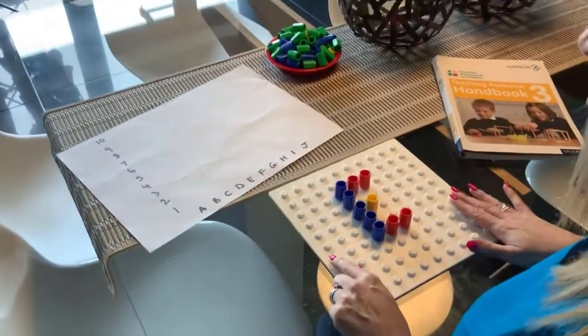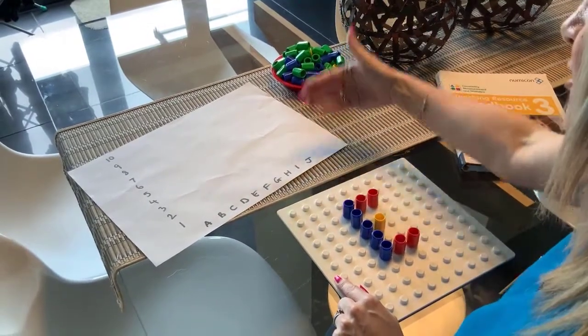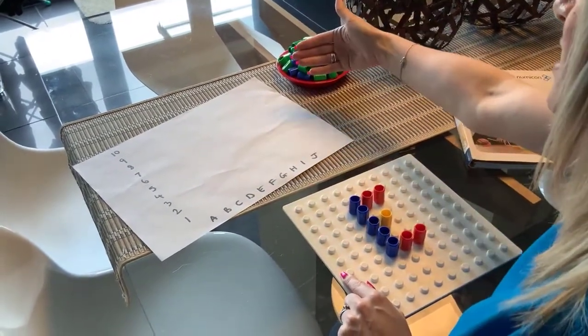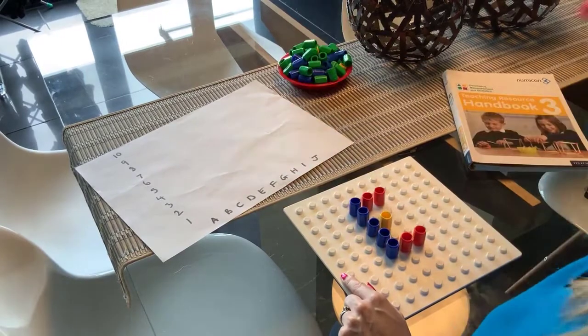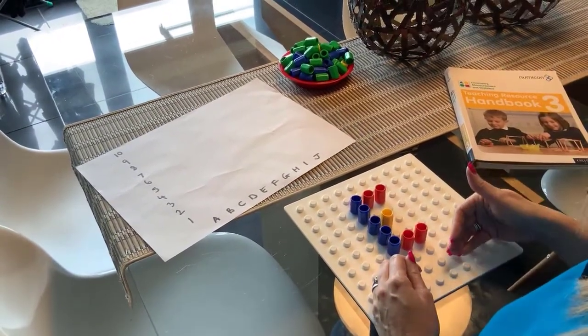So here I've set up on the baseboard a collection of pegs, and I'm assuming that I've got a barrier here of some description and a child on the other side with an empty board. So we're going to think about describing this pattern so the child can make the pattern that matches yours.